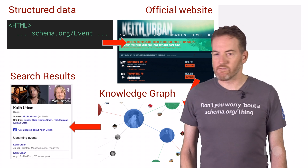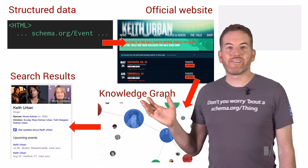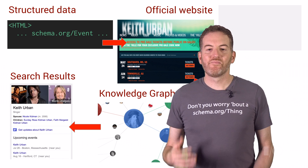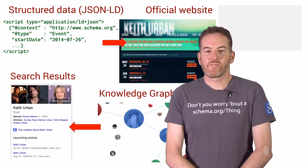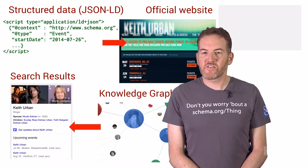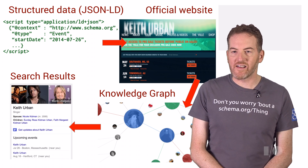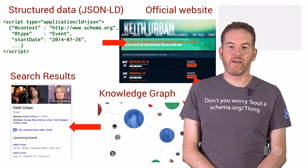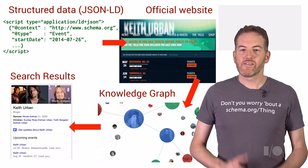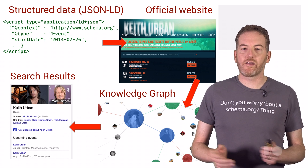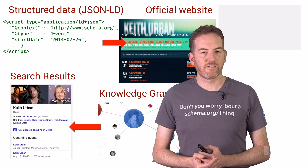Google can then read this markup as it crawls the web, add it to the Knowledge Graph, and show it to users in search. I'm going to show you how easy it is to add that markup thanks to the new JSON-LD format. But before I get to the technical details, let's take a quick peek at one way events from the Knowledge Graph show up in search.